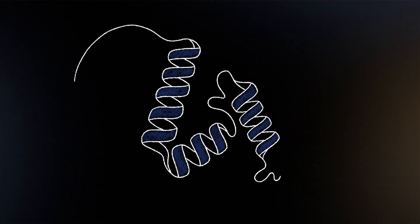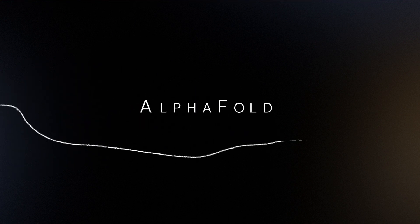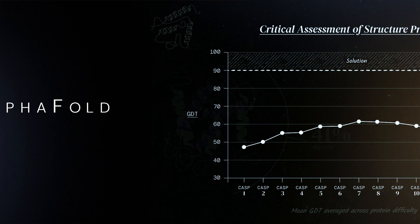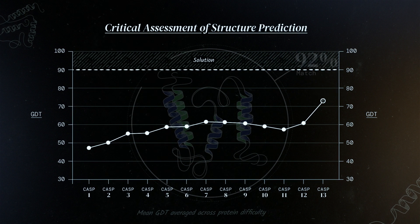Then two years ago, scientists at DeepMind, whose machine learning systems solved chess and Go, revealed AlphaFold, an AI that solves the protein structure prediction problem.